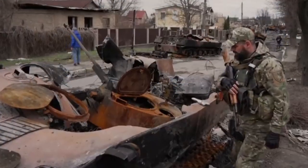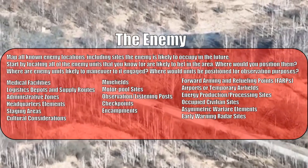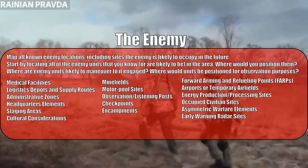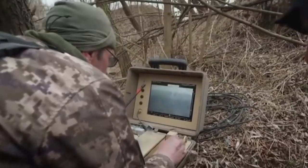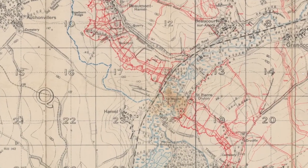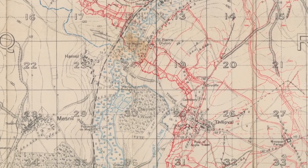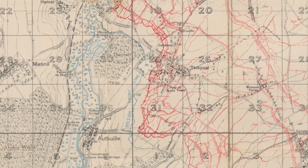Now that we've gotten our mobility corridors taken care of, started thinking about key terrain, annotated obstacles, and gotten a good baseline for local weather, we can start putting down the enemy. Put down every enemy location that you know of. If you know where the enemy is, put it on the map. If you don't know where they are, put where you think they are. Your assessment of where the enemy might be is informed by your earlier analysis of mobility corridors, terrain, and weather — all three factors help you understand where an adversary might be.